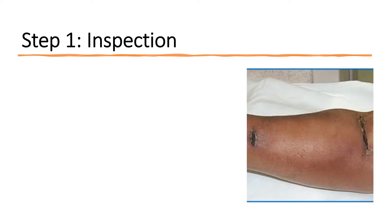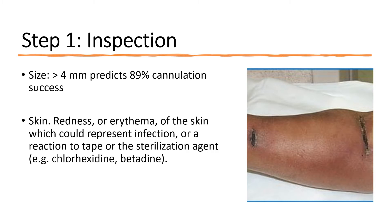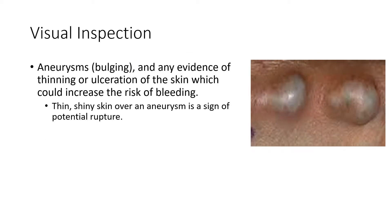First, we visually inspect the access. Look at the size of the fistula — greater than four millimeter diameter predicts 89% cannulation success. Look for redness or erythema, which could represent infection or a reaction to tape or sterilizing agents such as chlorhexidine or betadine. Look for aneurysms, which are dilations of the wall of the blood vessel. Also look for thinning or ulceration of the skin — thin, shiny skin over an aneurysm is a sign of potential rupture.